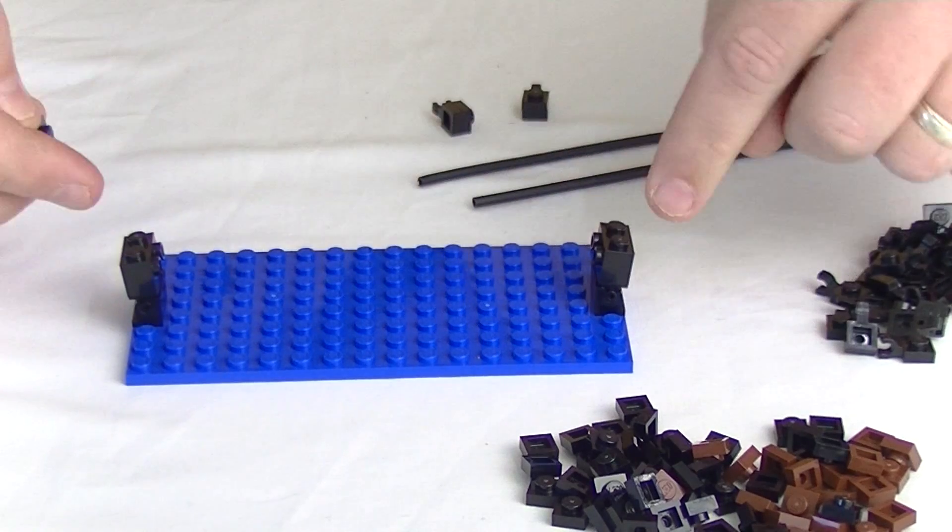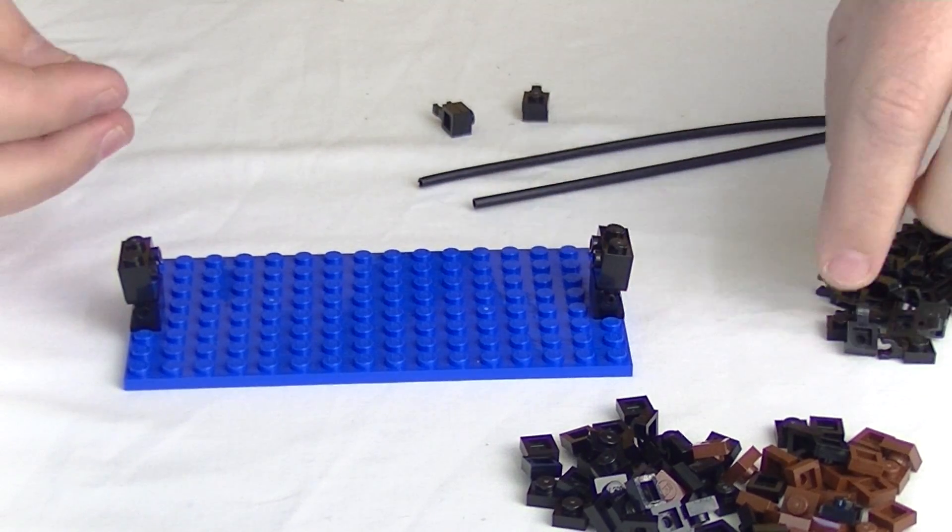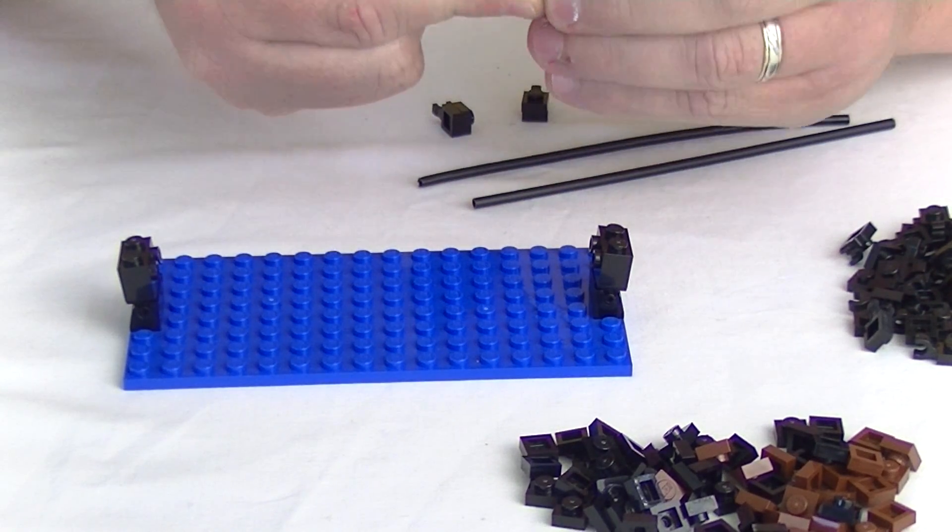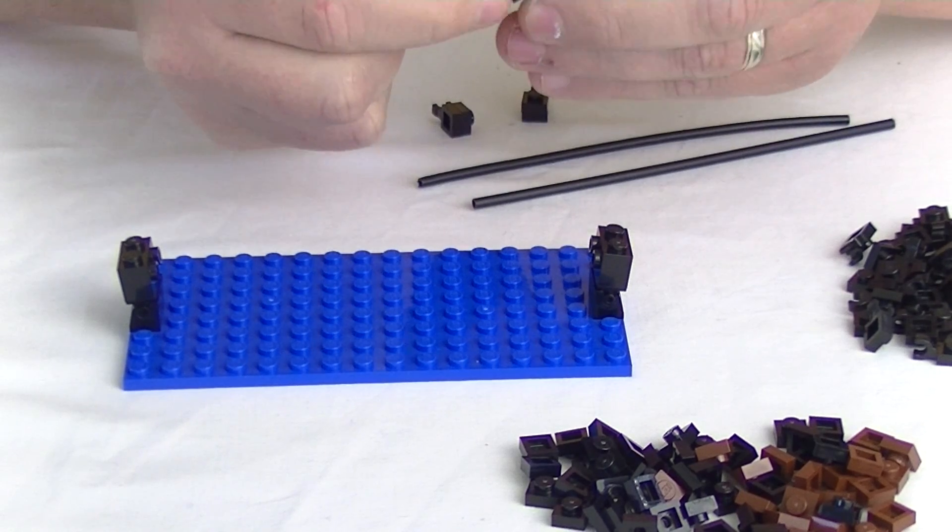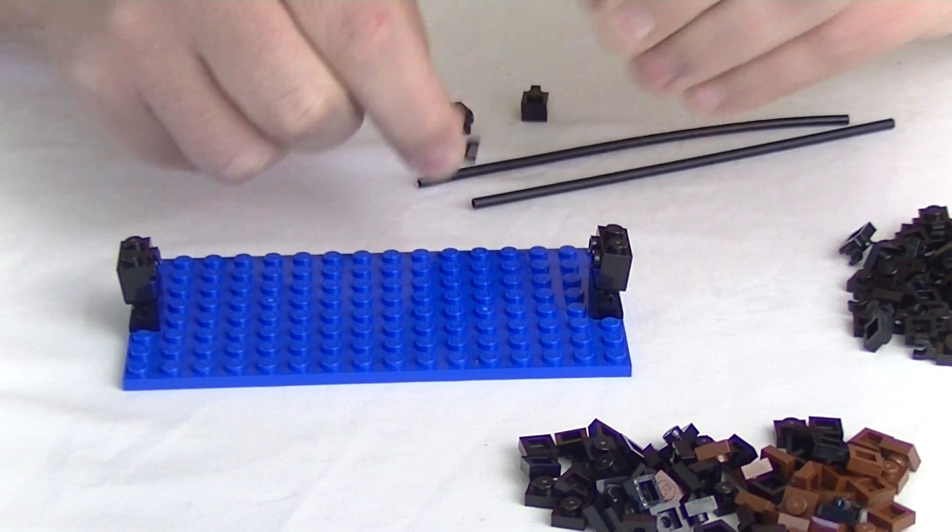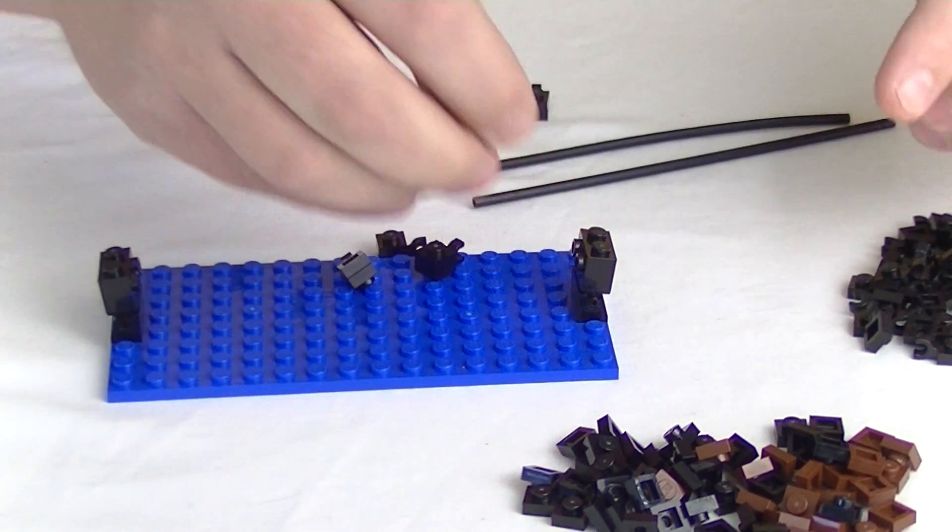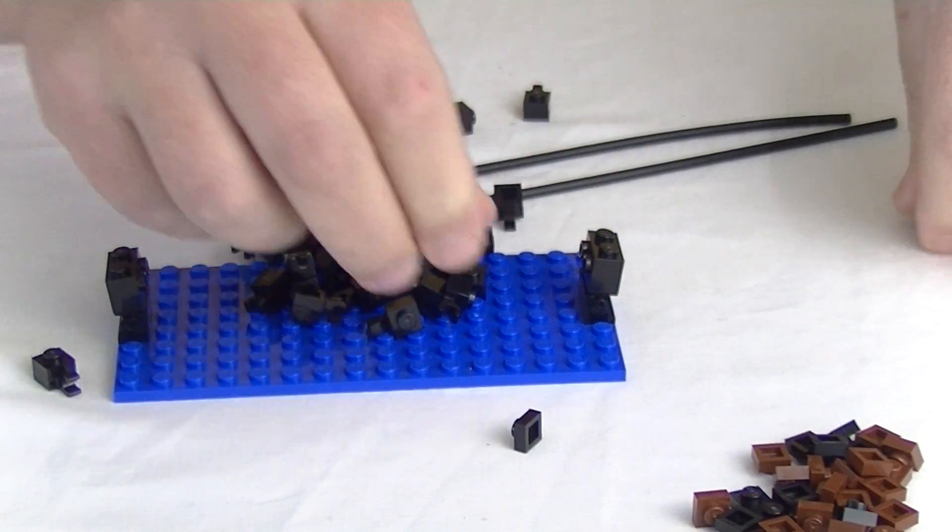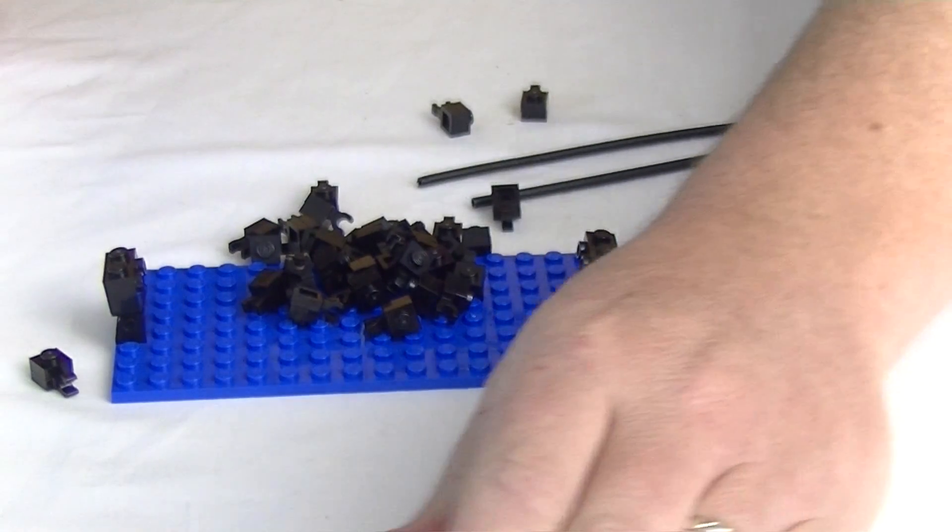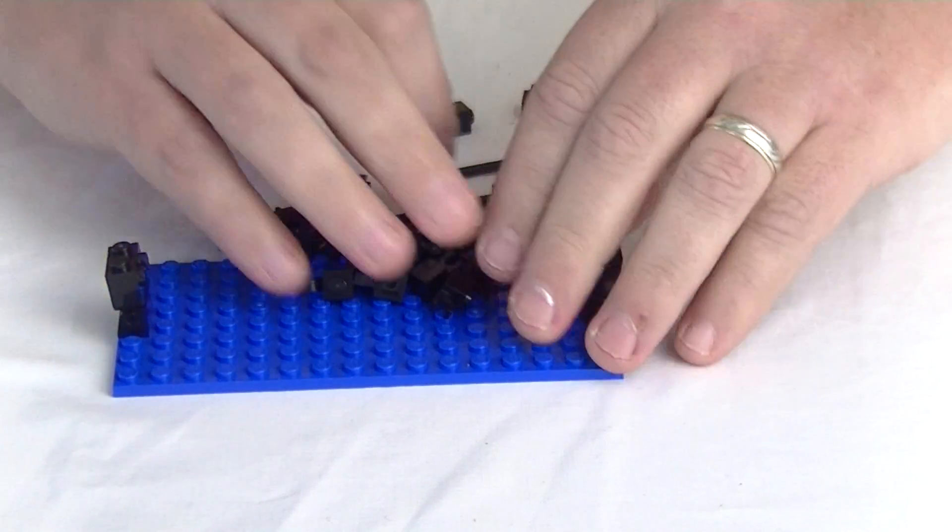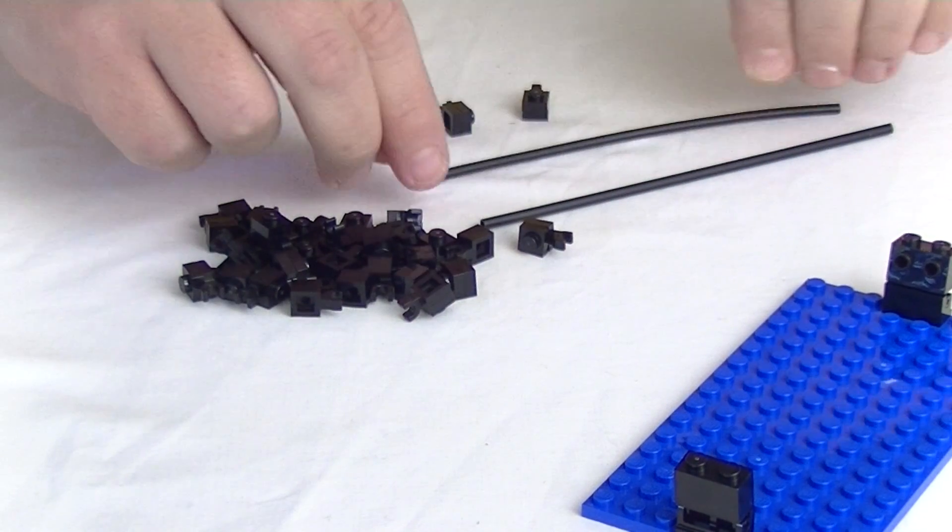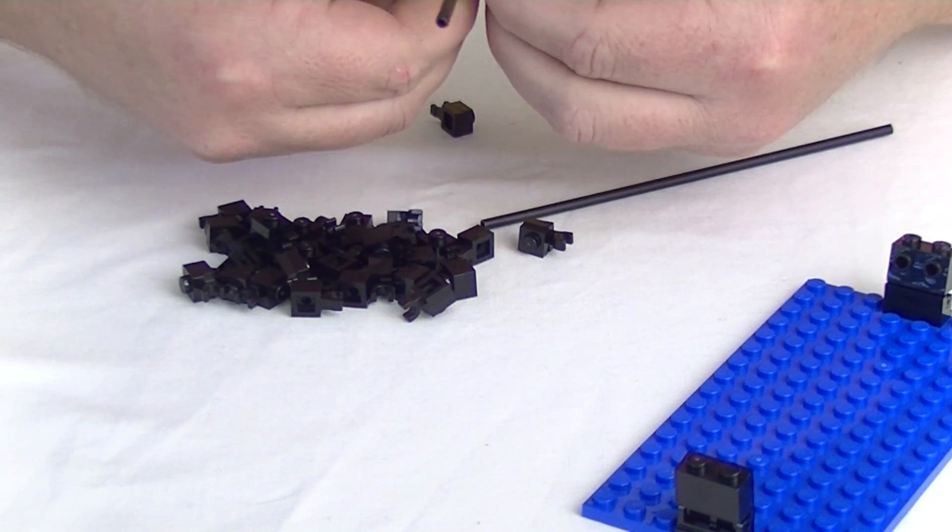So I need 32 all up. So I'm just going to clip all these together. 31, 32. Okay, so I've got all the clips made up now. Now it's just a matter of putting them all on the rigid hose.